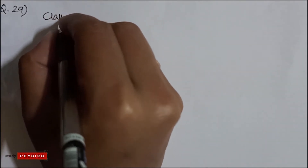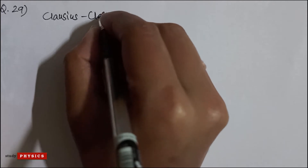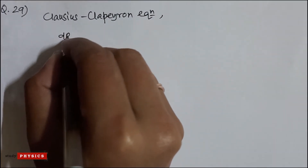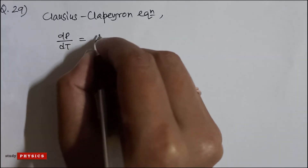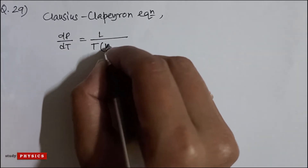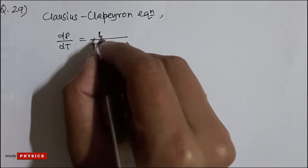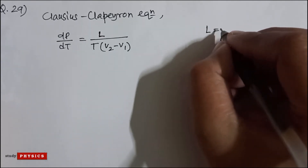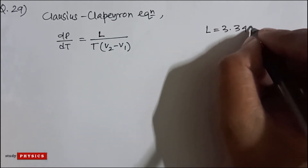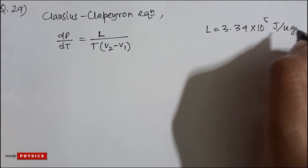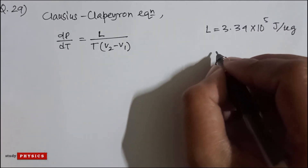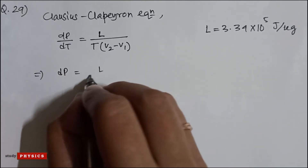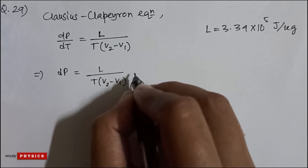We know the Clausius-Clapeyron equation: dP/dT equals L divided by T into (V2 minus V1), where L is the latent heat of fusion. So here L is 3.34 into 10 to the power 5 joule per kg. So dP equals L divided by T(V2 minus V1) dT.